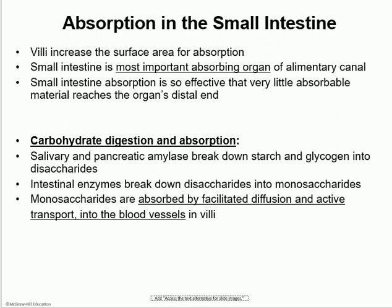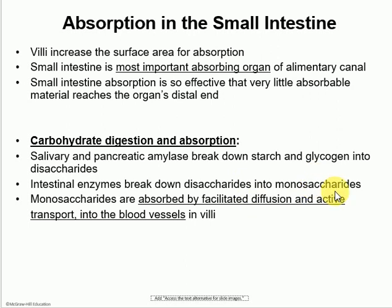For carbs, the very first enzyme that starts the digestion of carbs is in the saliva — salivary amylase starts the digestion of carbs, breaking it down into disaccharides. We also have pancreatic amylase, which works in the small intestine. It's not until we reach the intestinal brush border where sucrase, maltase, and lactase break down the disaccharides into their monosaccharides. These monosaccharides are then absorbed by facilitated diffusion and active transport and go straight into the bloodstream.